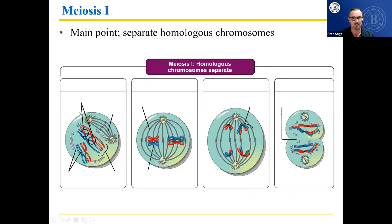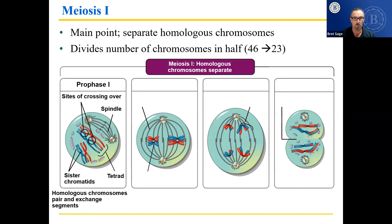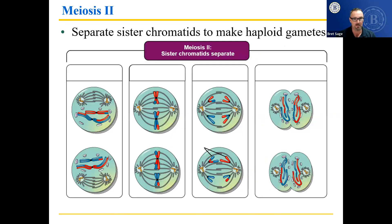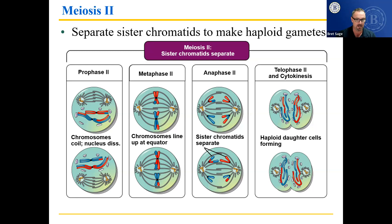In meiosis one, the main point is separation of homologous chromosomes — it divides the number of chromosomes in half. You don't need to worry about these figures for the test, but they do show all the different stages in meiosis one. In meiosis two, the key is to separate those sisters — those identical copies from each other. It's very similar to mitosis, except you're starting with half as many chromosomes.